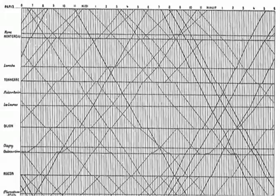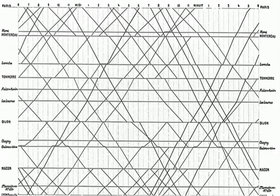Here we have another image — a train schedule showing different trains moving from one location to another. It shows many lines and is not easy to understand. From a chart junk perspective, I would remove the background lines because they are not clear. Removing them adds clarity. The chart junk principle tells you to have clarity in your visualization so every person can understand it easily. Chart junk can be applied in both a positive and negative sense.